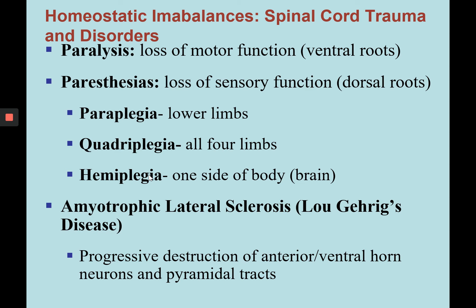As homeostatic imbalances, we have spinal cord trauma and disorders. Paralysis involves the loss of motor function, usually damage to the ventral roots of the spinal cord. Paresthesias involves loss of sensory function, usually something wrong with the dorsal roots. Paraplegia is when only the lower limbs are affected; quadriplegia is when all four limbs are affected; hemiplegia is when one side of the body is affected, normally resulting from brain damage. Amyotrophic lateral sclerosis, or Lou Gehrig's disease, is caused by the progressive destruction of anterior ventral horn neurons and pyramidal tracts, damaging ventral horn motor signals going to muscles.